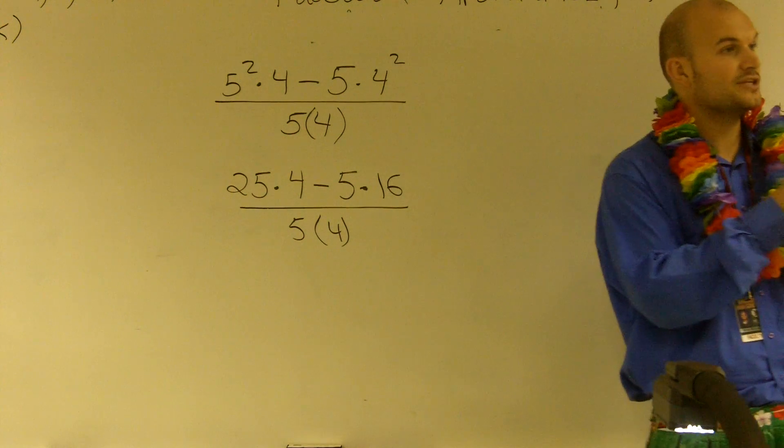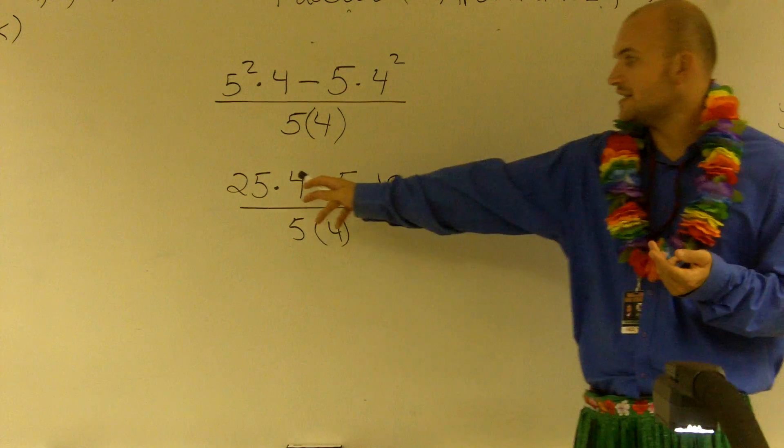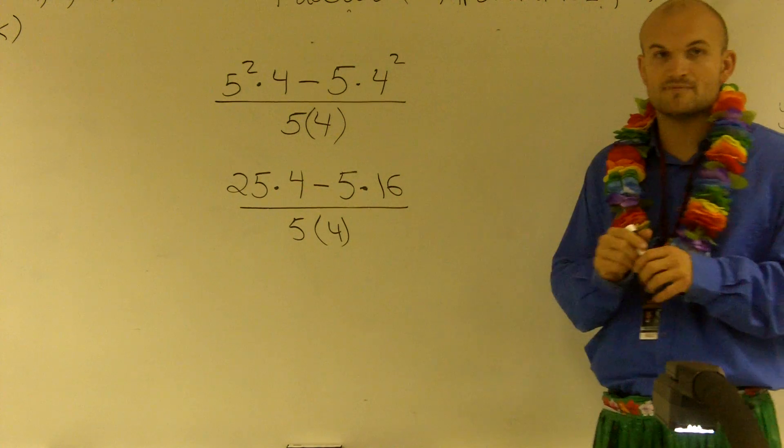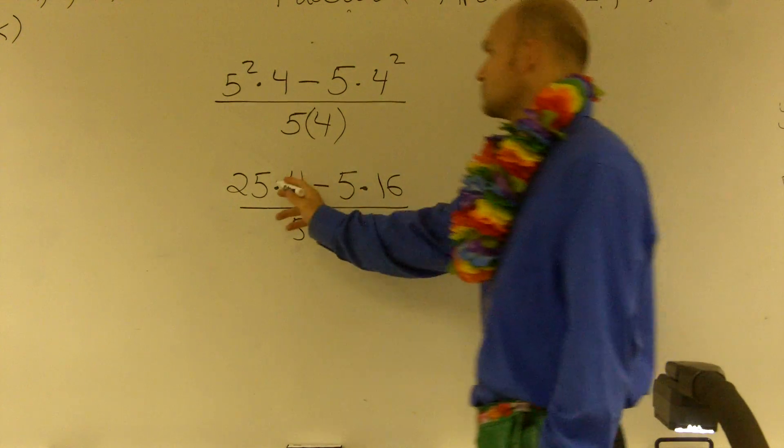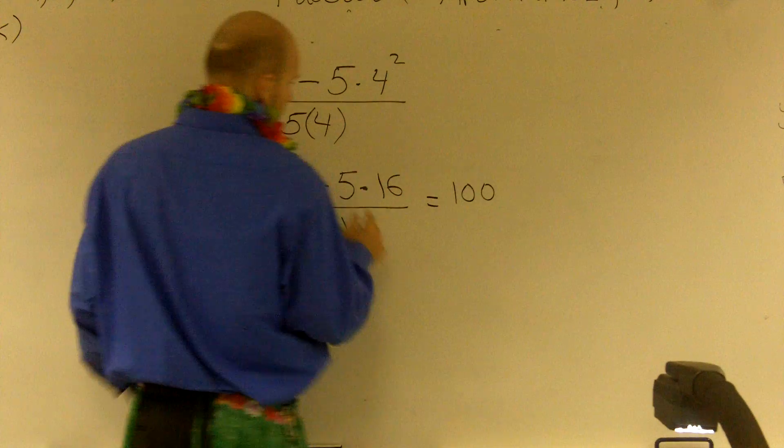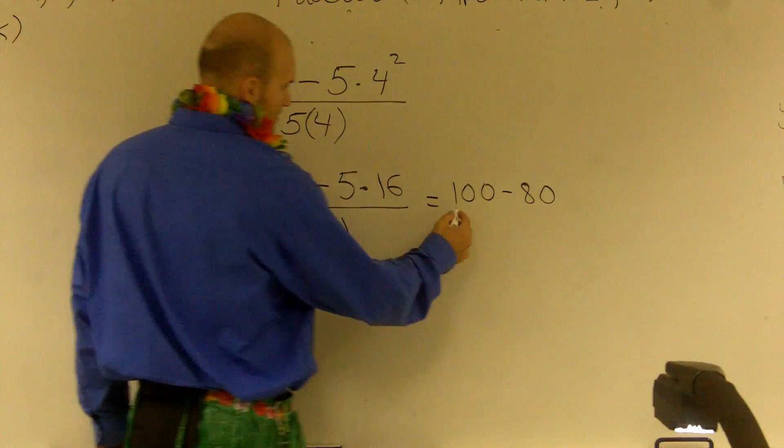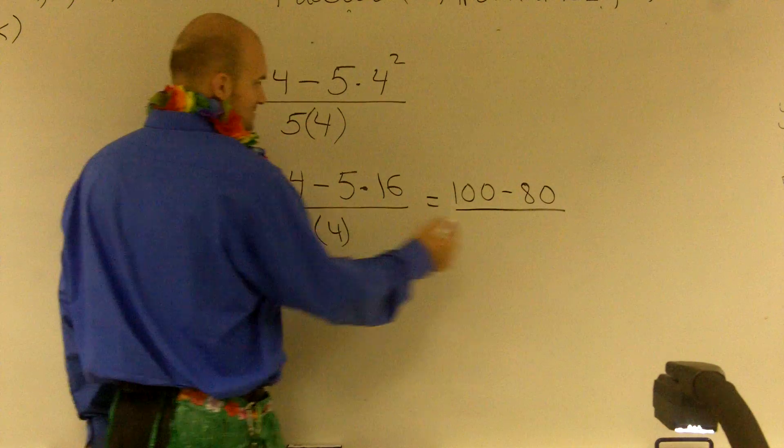The next thing I said is to do multiplication and division. Let's get all these multiplication problems done. So 25 times 4 is going to leave me 100, 5 times 16 is going to leave me 80, and 5 times 4 gives me 20.